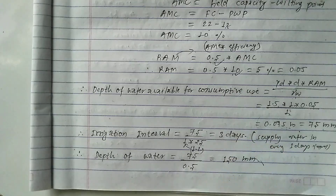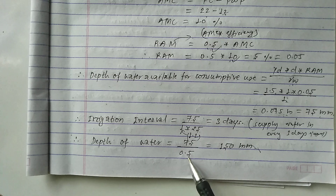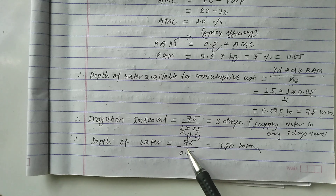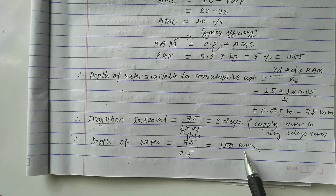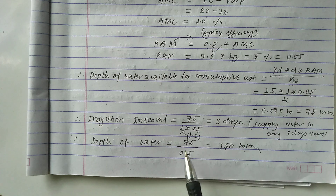Now we calculate the depth of water to be applied. Using the efficiency formula: efficiency = output / input, i.e., depth available for consumptive use / depth of water applied. So depth of water = 75 / 0.5 = 150 mm.